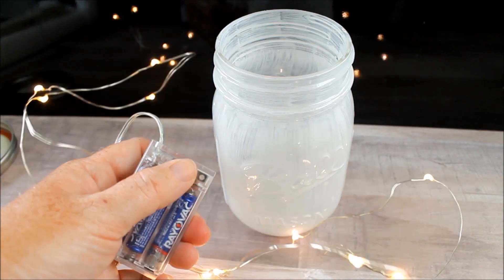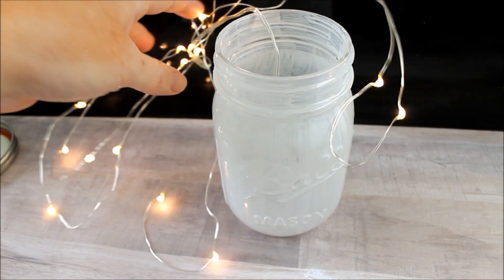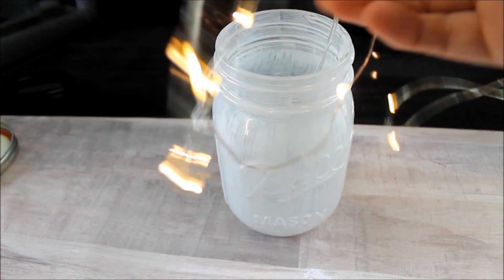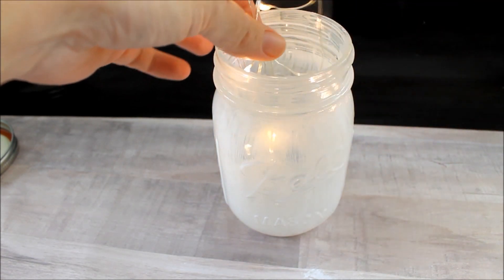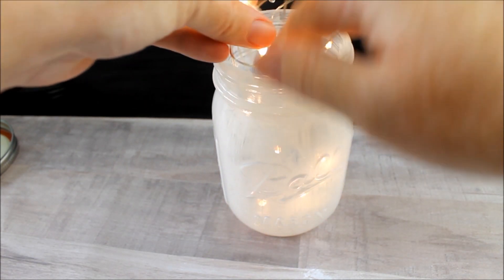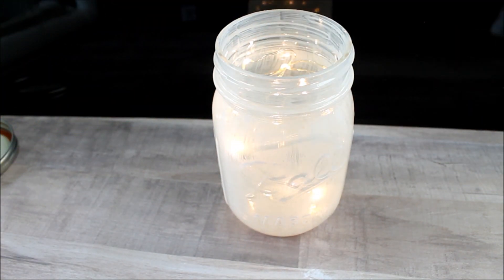When everything is dry, you just need to add some kind of lights. This is a battery-operated light pack. You could add Christmas lights, battery-operated tea lights—literally any kind of battery-operated light can be added to the inside of this mason jar.